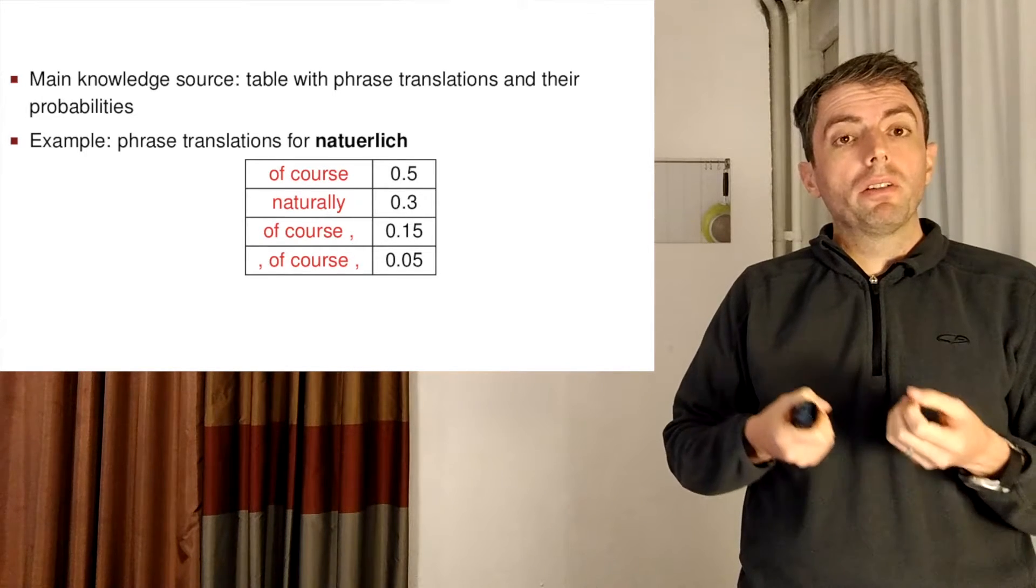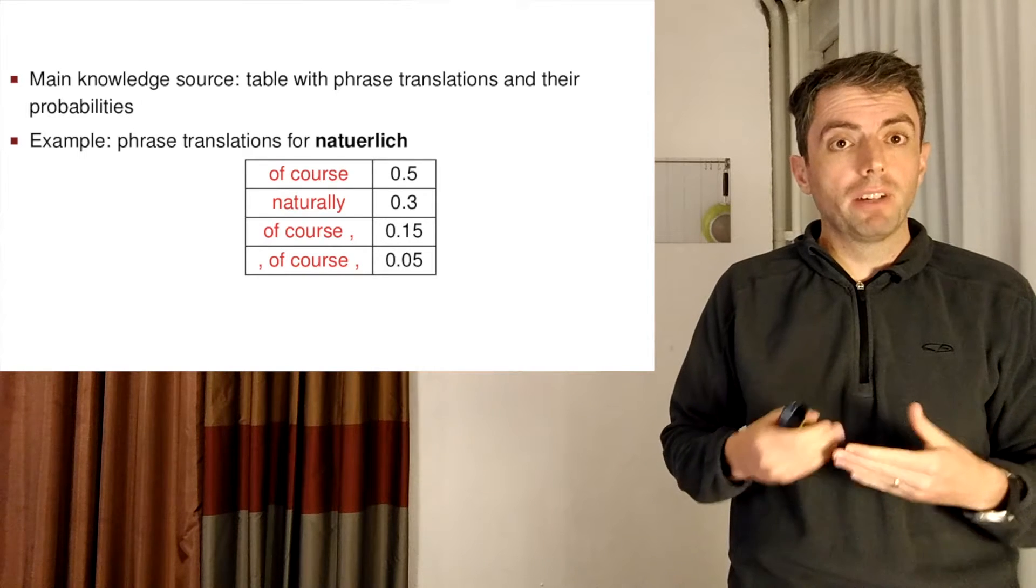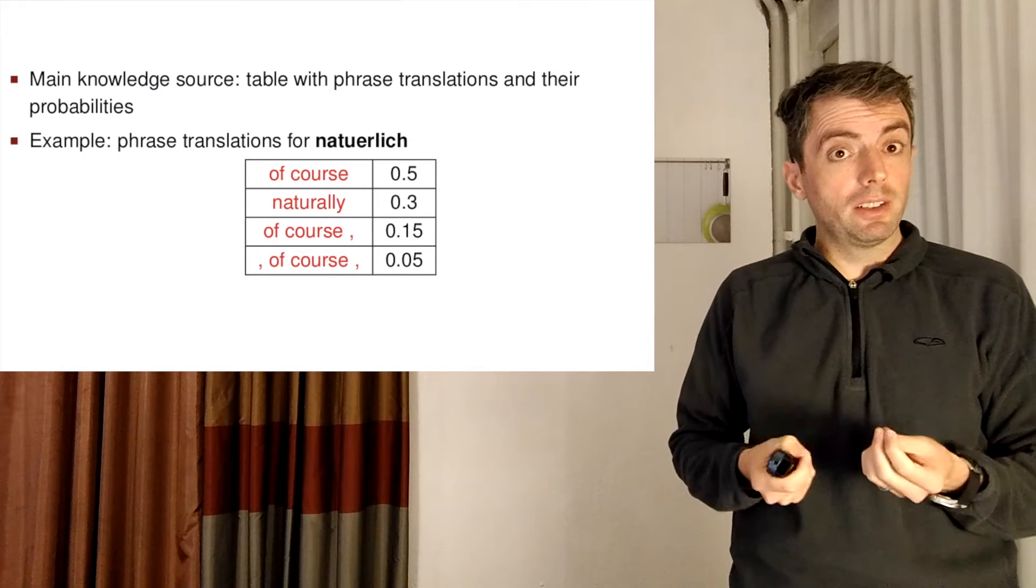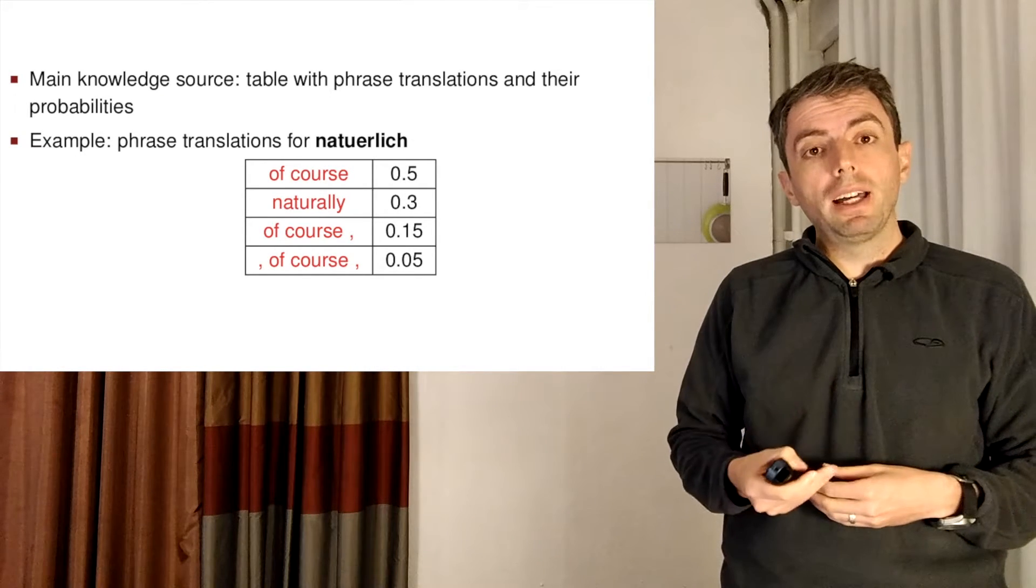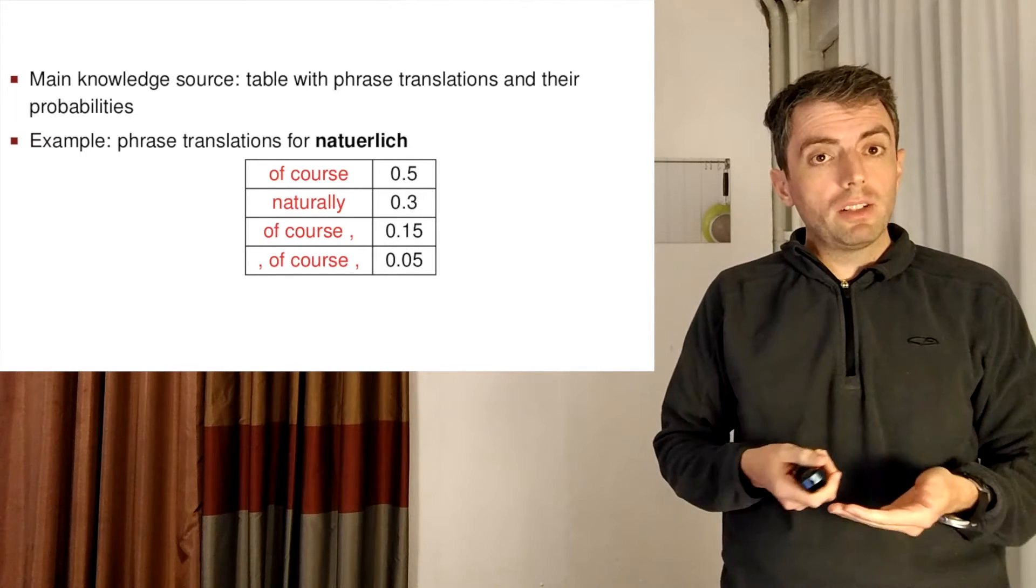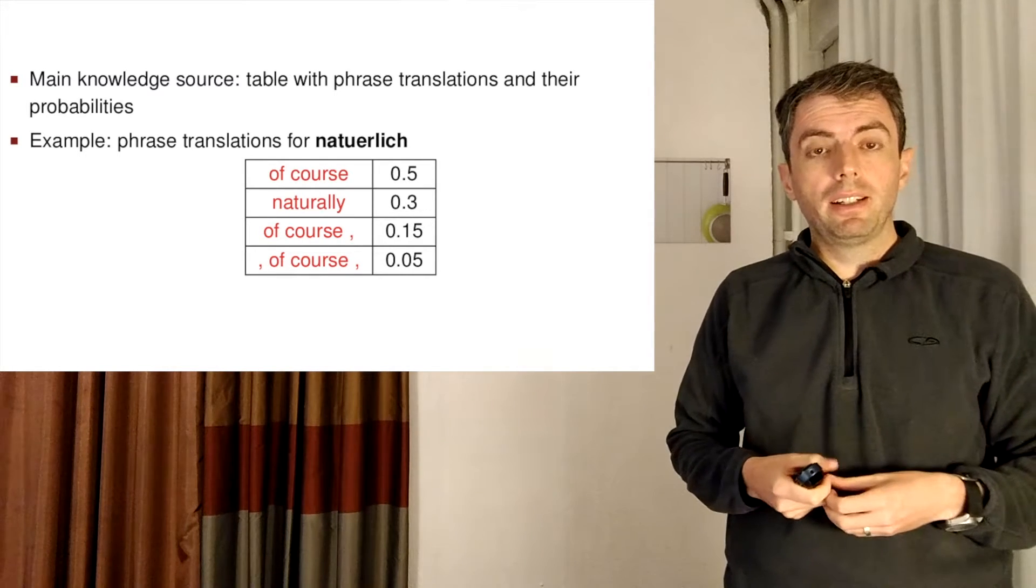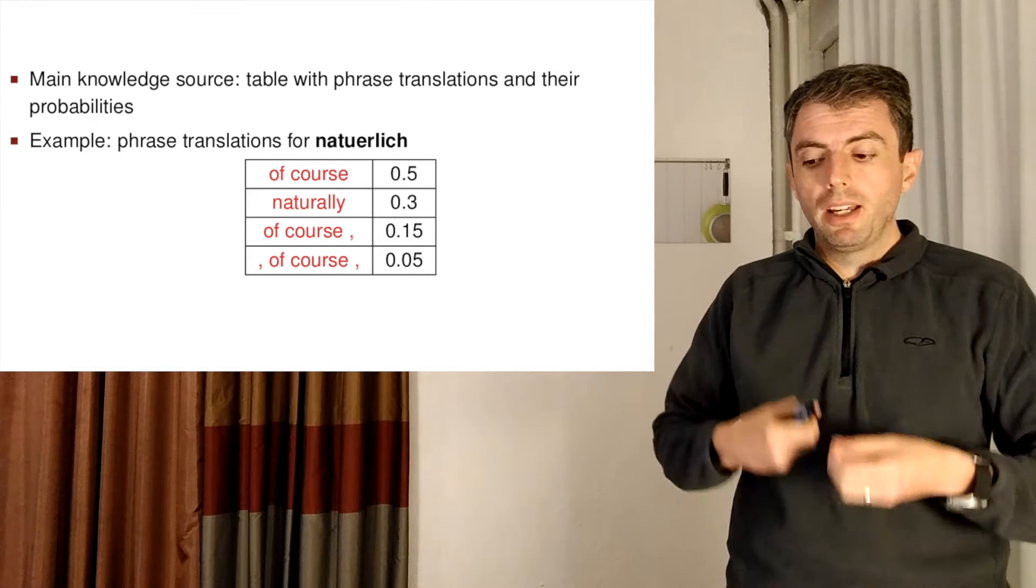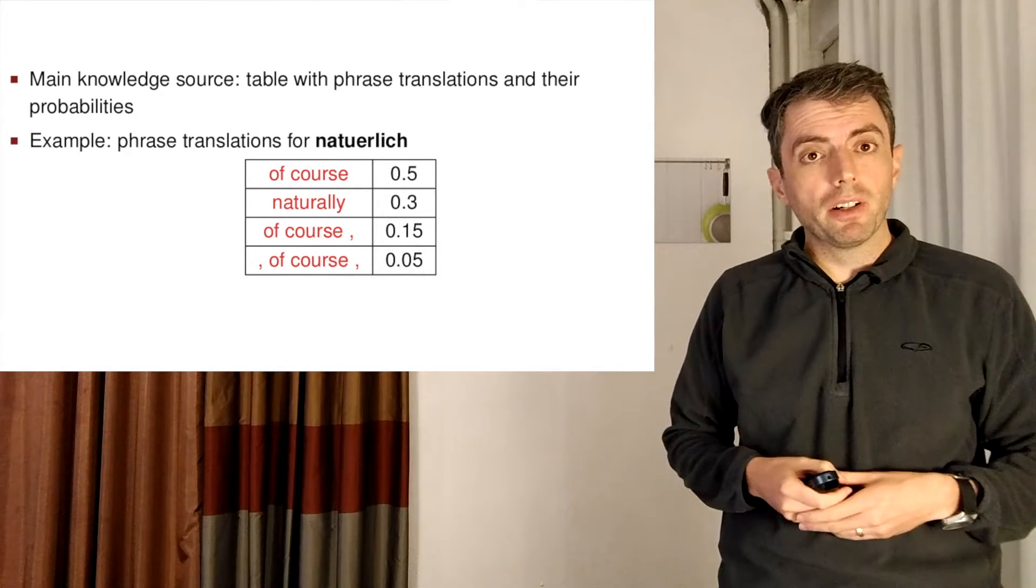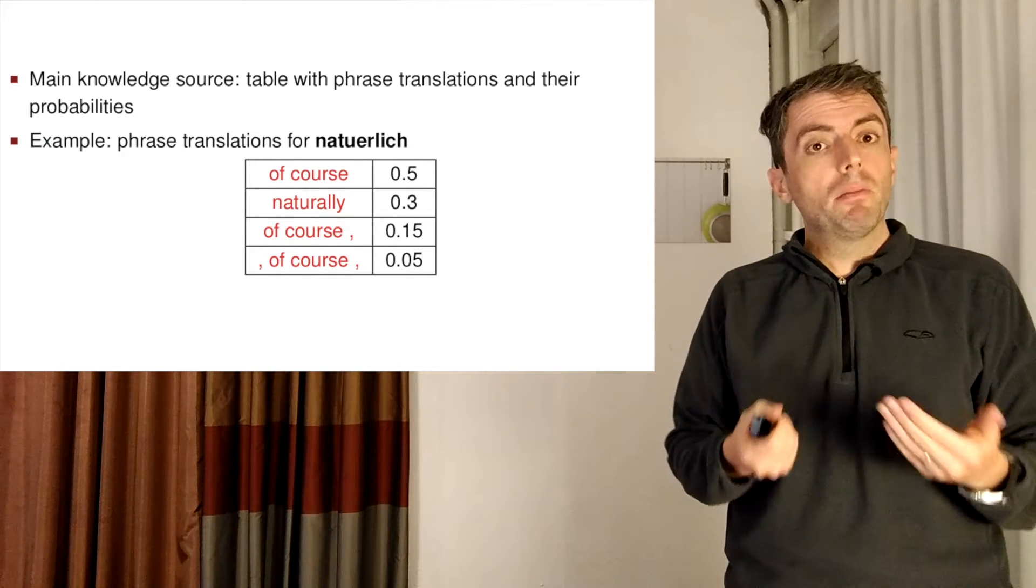We're going to be talking about phrase tables as we move forward in our discussion of phrase-based translation. Phrase tables take some phrase such as natürlich and provide a translation with a probability for each of the alternative ways that this phrase could be translated into English. So for example, 0.5 probability you have 'of course,' and you have probabilities for other options. And because this is phrase-based translation, this includes things like punctuation.